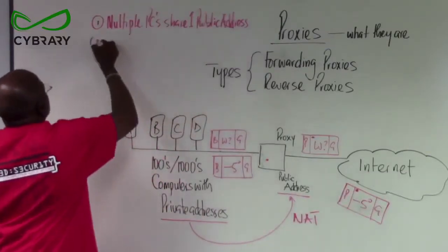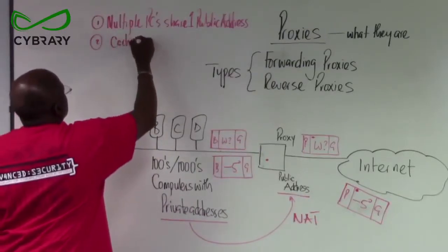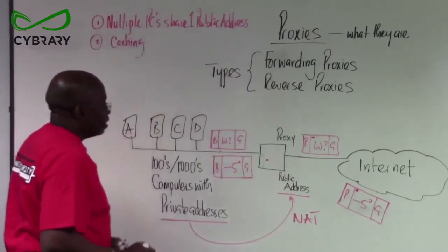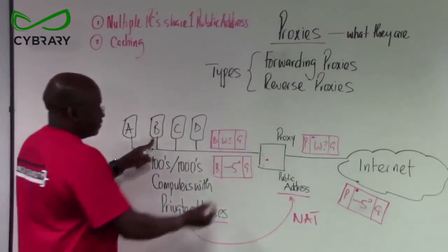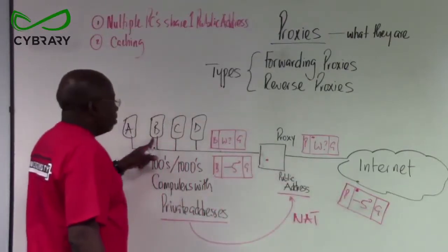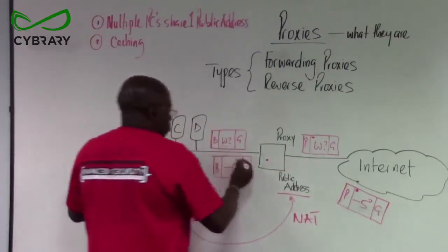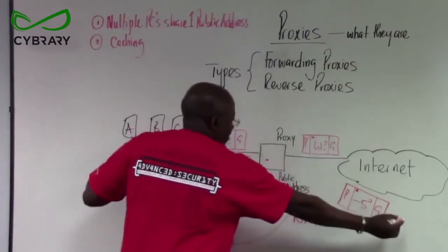Two, we have something called caching. Computer B did ask for the weather from Google. It takes a while, a short while, for the proxy to go service that request.